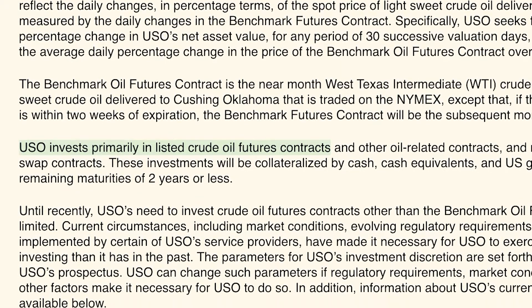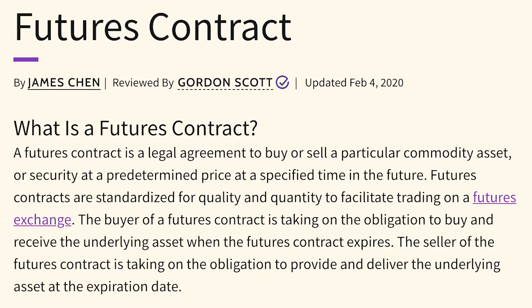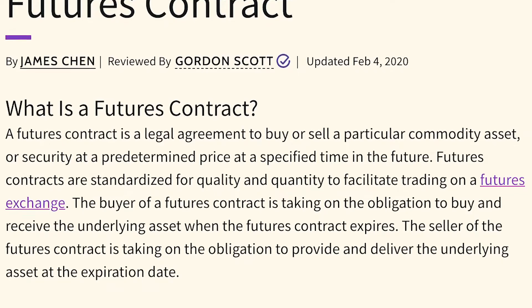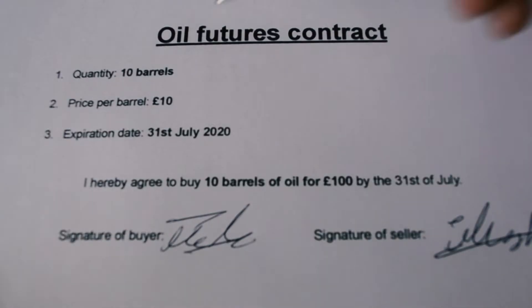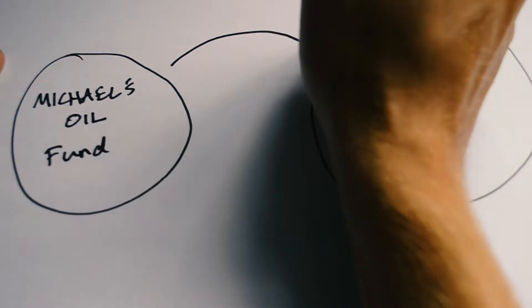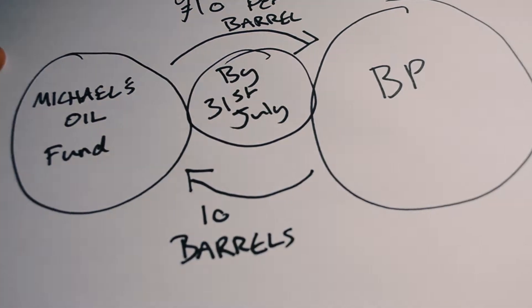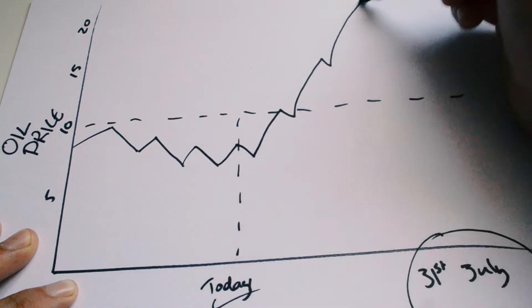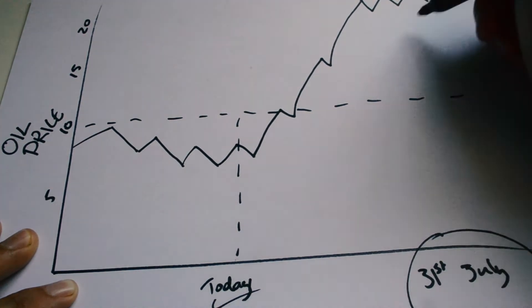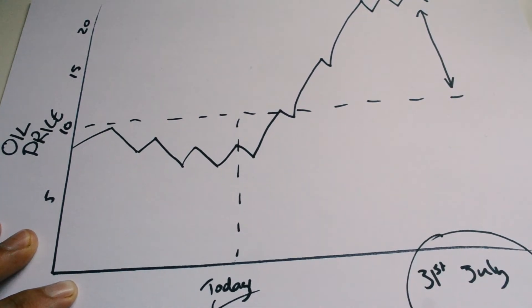Now we can start talking about futures and how the USO fund works. A futures contract is just an agreement between a buyer and a seller to purchase certain commodities by a certain date. For example, if I was a large fund — say Michael's Oil Fund — I could agree with an oil producer like BP to purchase 100 barrels of oil for £10 per barrel by July 31st. This is great if the price of oil goes up, as I can still purchase at the agreed £10 per barrel.